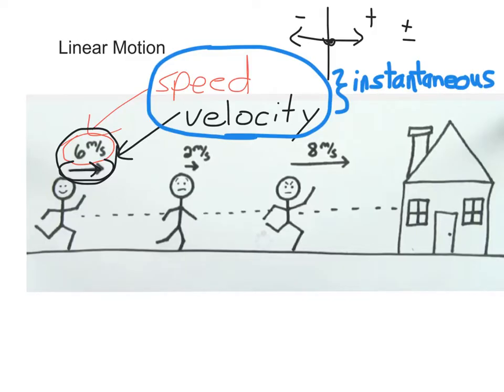Instantaneous measurements of how fast you're going mean at that exact moment, that's how fast you're going, in that instant. So I call this an instantaneous speed or velocity because you're getting it basically from a measurement taken exactly at that point in time.